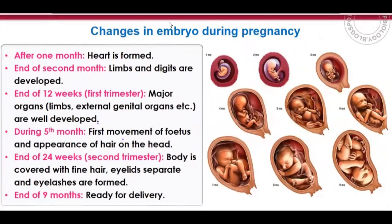After one month of pregnancy, the heart is formed. At the end of the second month, limbs, muscles, arms, legs, and digits start to form. At the end of 12 weeks — the first trimester — major organs like limbs and external genital organs are well developed.